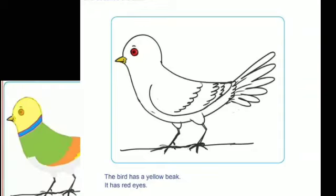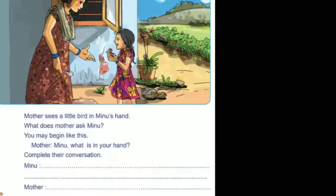You can see the picture I colored — color like this. Is it clear? Now Activity Number Three: Mother sees a little bird in Minu's hand. What does mother ask Minu? They have given a start — Mother: 'Minu, what is in your hand?'